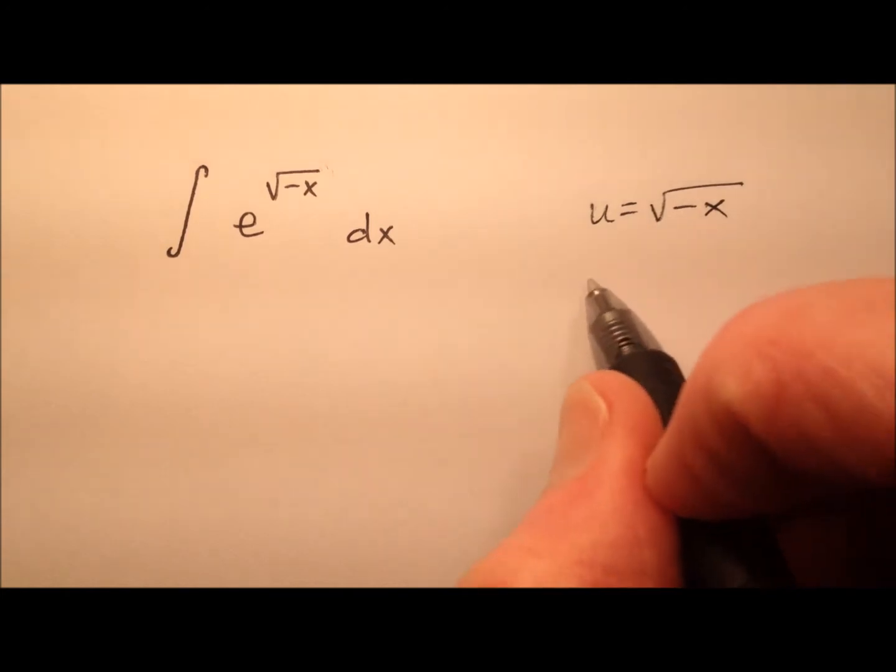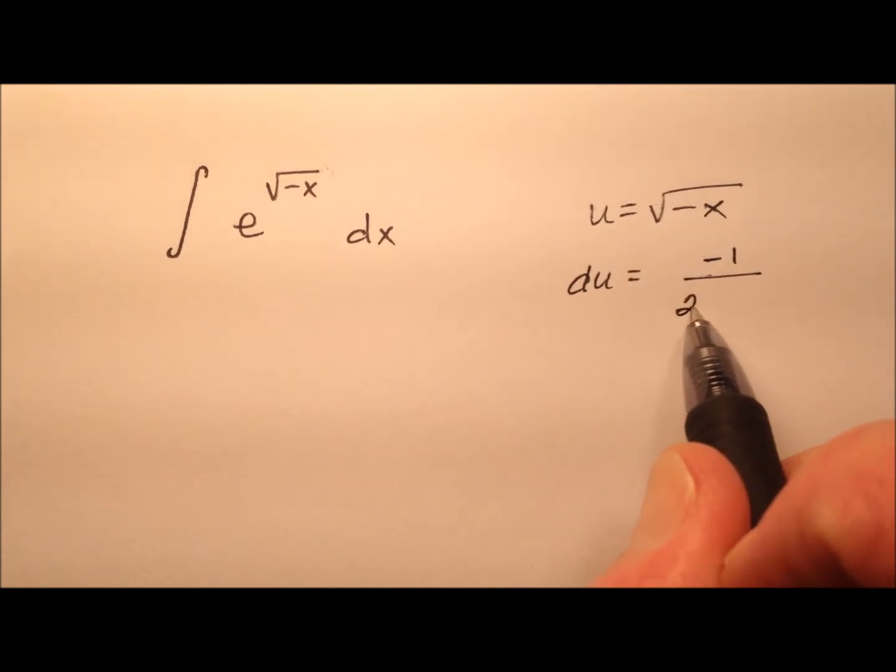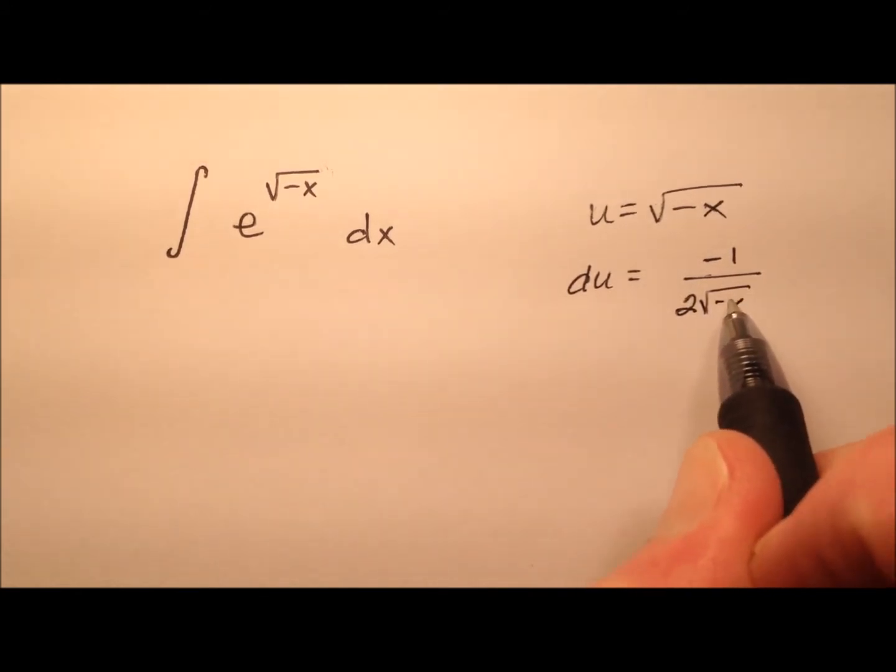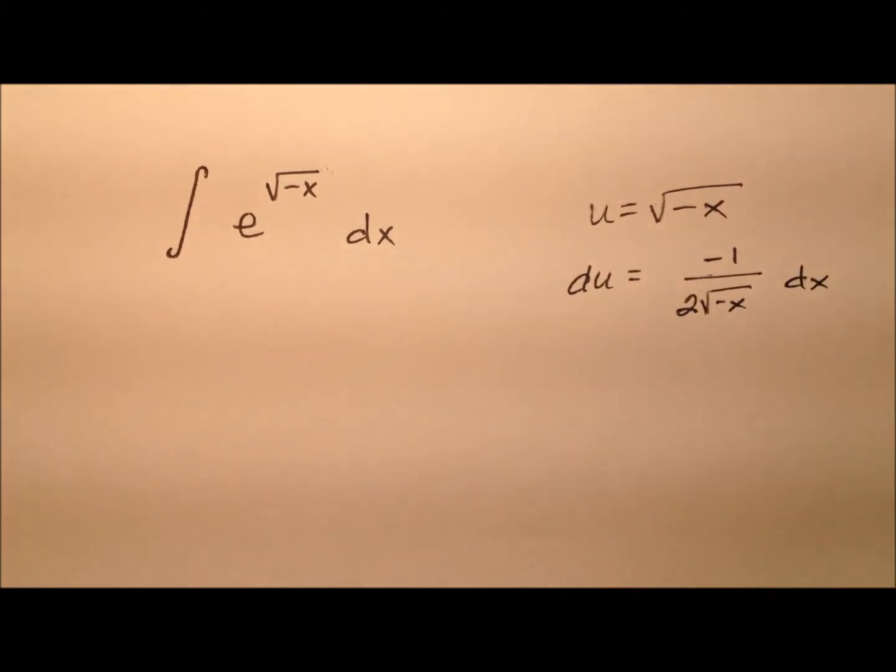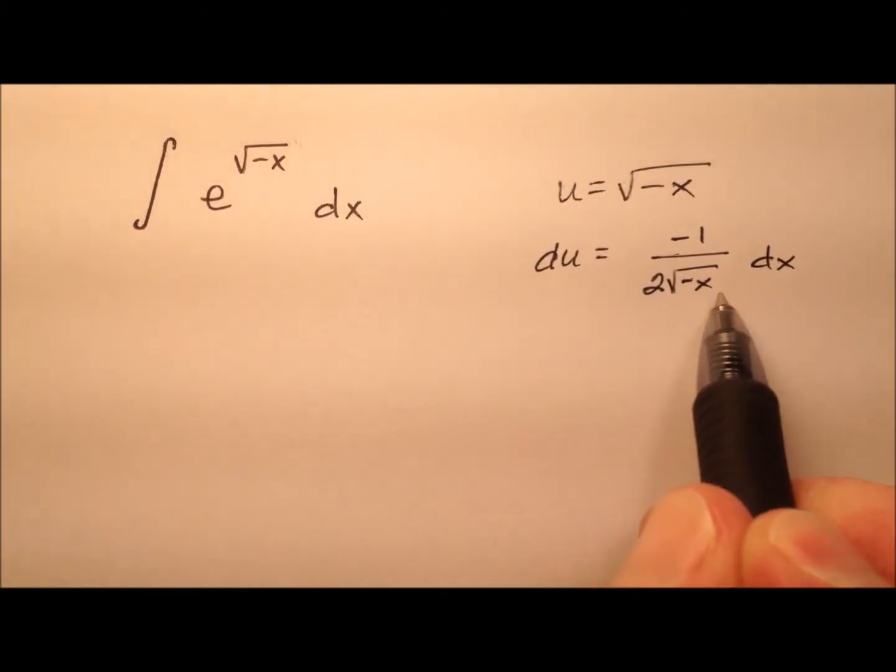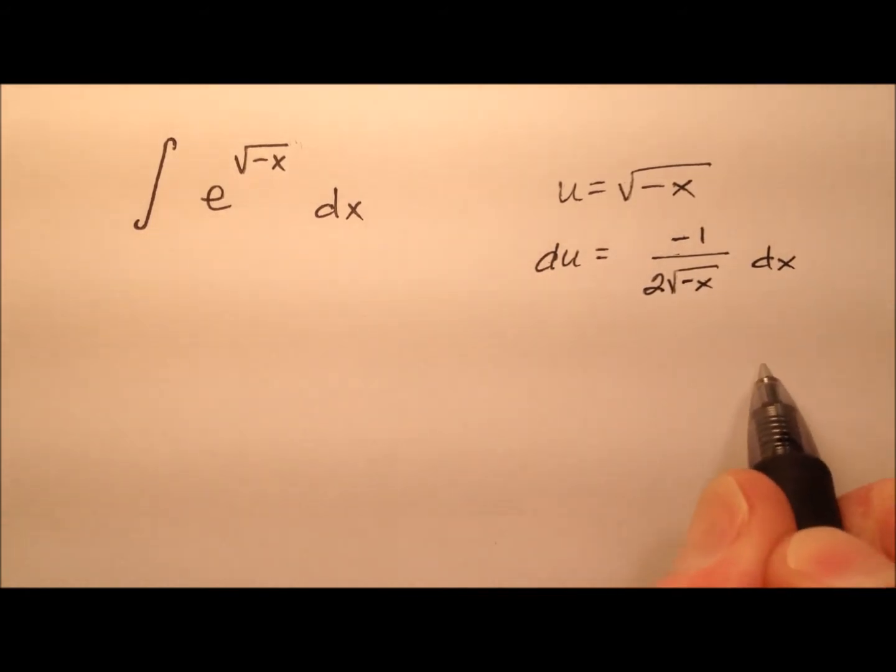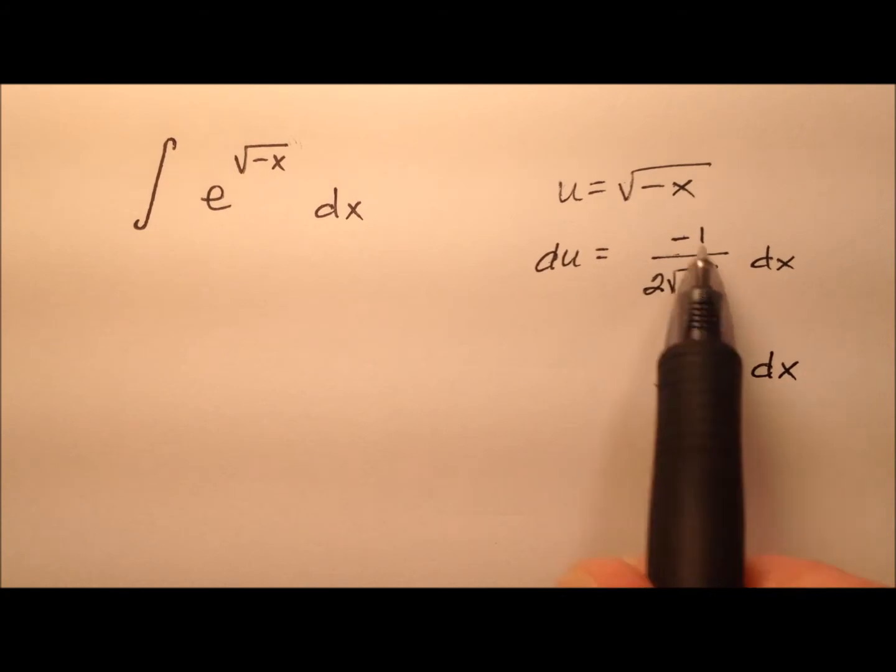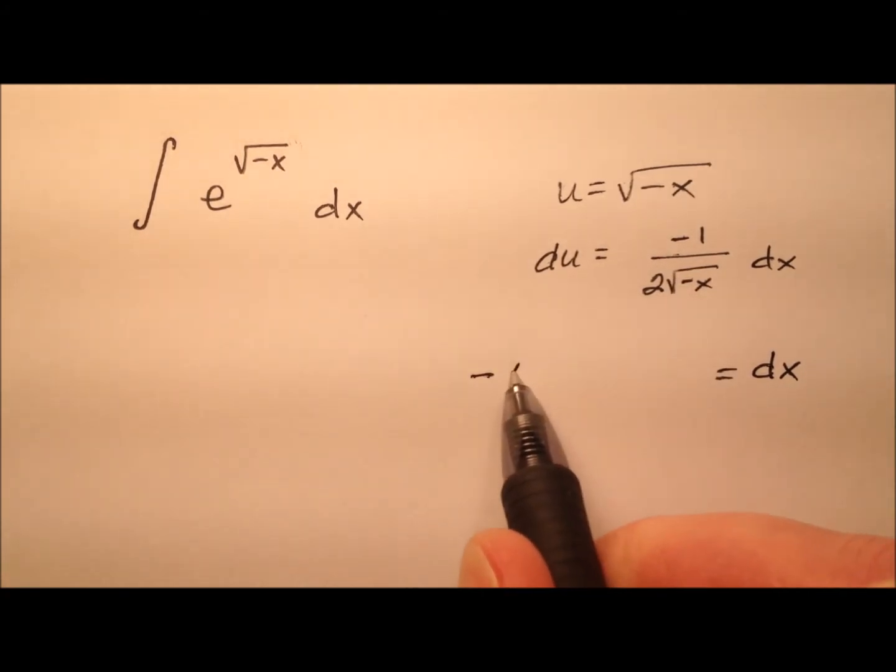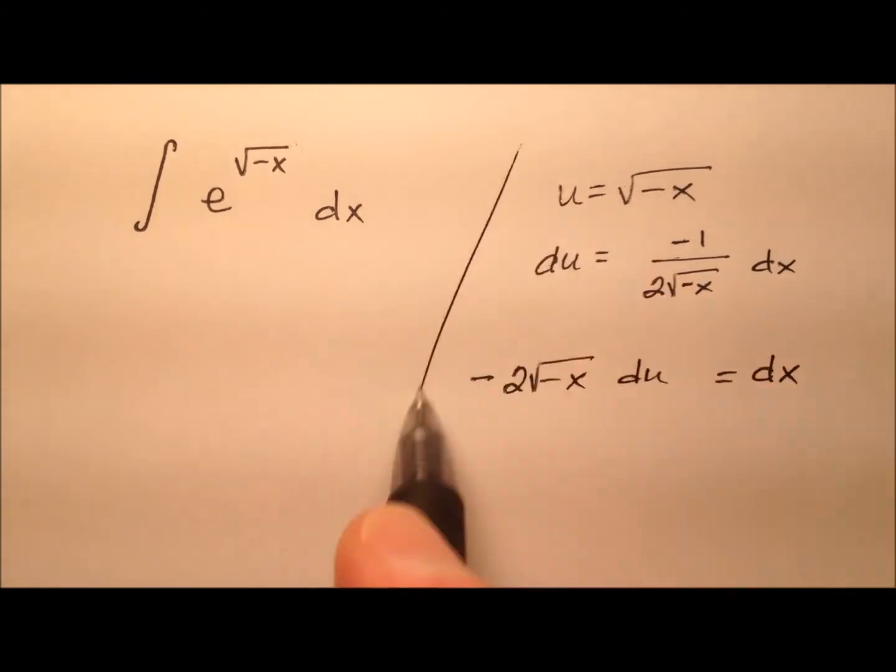So when we differentiate both sides, we'll have du equals, and then it looks like the derivative of that will be negative 1 over 2 times that square root of negative x, dx. So let's solve for dx. We will multiply both sides by negative 2, and then the square root of negative x. So dx equals negative 2 square root of negative x du right there.